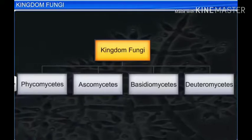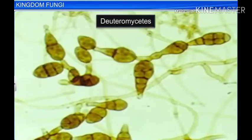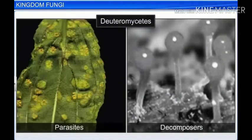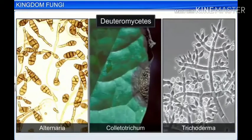The last class of fungi, Deuteromycetes, is known as imperfect fungi because we do not know enough about their life cycles. Only their asexual or vegetative phases are known. Deuteromycetes reproduce only through asexual spores known as conidia. They too have a septate and branched mycelium. They are saprophytes or parasites, while a large number of them are decomposers which help in mineral cycling. Alternaria, Colletotrichum, and Trichoderma are examples of Deuteromycetes. Therefore, members of kingdom fungi display a diverse set of characteristics.